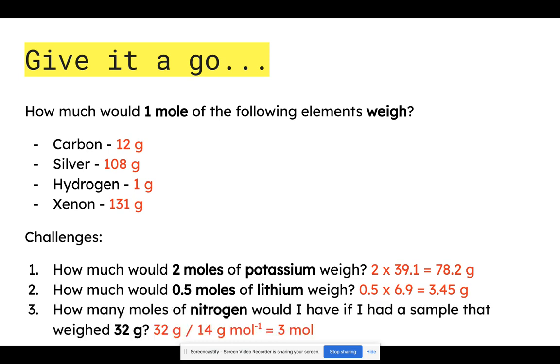And finally, how many moles of nitrogen would I have if I had a sample that weighed 32 grams? I know my mass and I know my molar mass. I know that one mole would weigh 14. So if I divide my mass by my molar mass, I can work out my number of moles. 32 divided by 14 gives me three mol. Note the use of the units there. That's an important skill to practice.